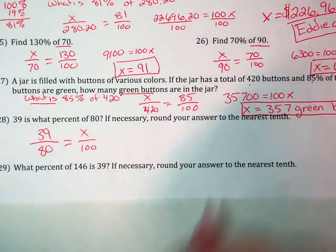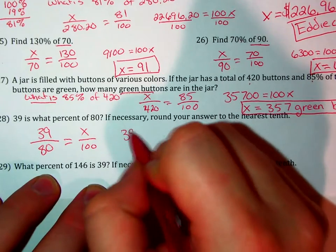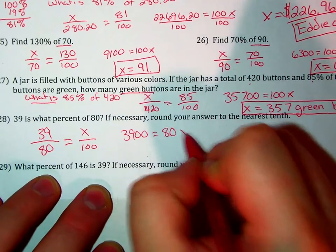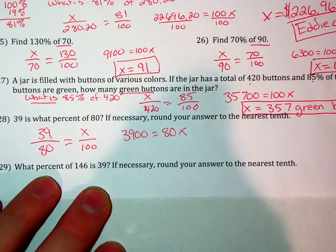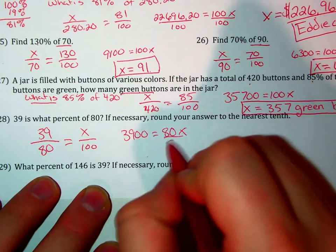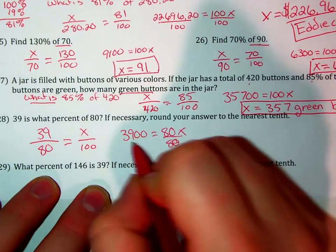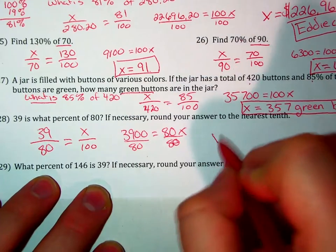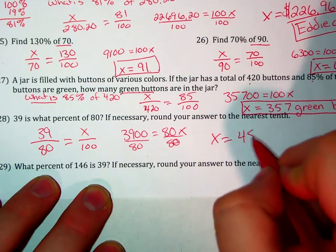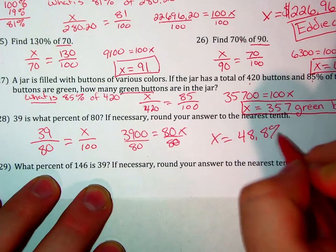We cross multiply: 3,900 equals 80X. Divide both sides by 80, and X equals approximately 48.8 percent.